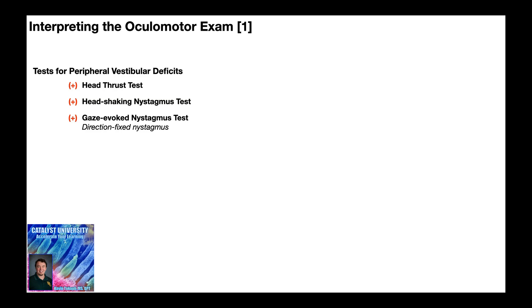Now remember that the gaze-evoked nystagmus test has two types of results that depend on the nature of the nystagmus. The direction-changing nystagmus is more indicative of a central deficit, but when it's direction-fixed, that's more indicative of a peripheral vestibular deficit.